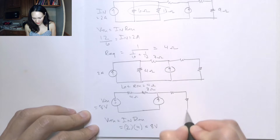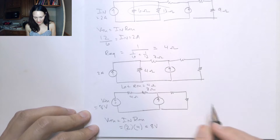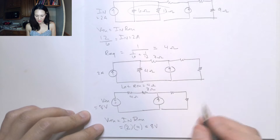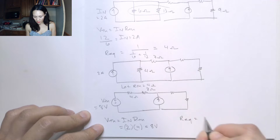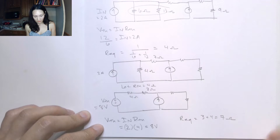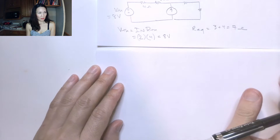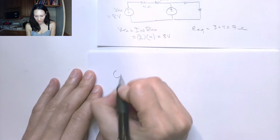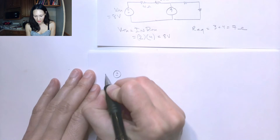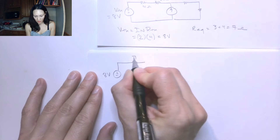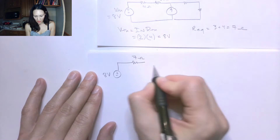I still have the right side, but now I can easily add the two series resistors. The R-equivalent is 3 plus 4, which is 7 ohms. So continuing to simplify, I now have an 8-volt voltage source in series with a 7-ohm resistor.